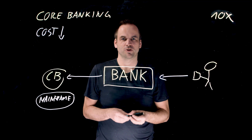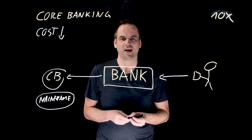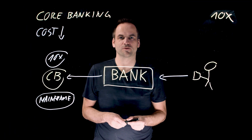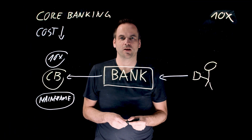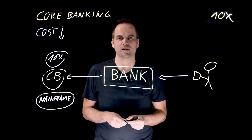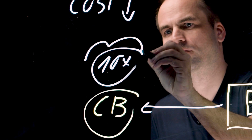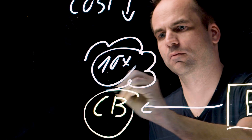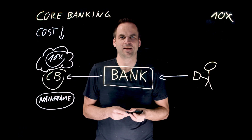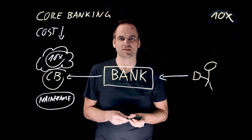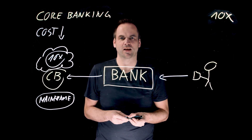Instead of that, you can build this technology in the cloud. So instead of processing all the workloads in the mainframe, you can choose a cloud-native technology like 10x Banking. This runs in the cloud if you want to. With that you get all the cost efficiency, scalability, and elasticity. And because it's built on data streaming, it provides real-time business processes between the customers and the backend platforms.